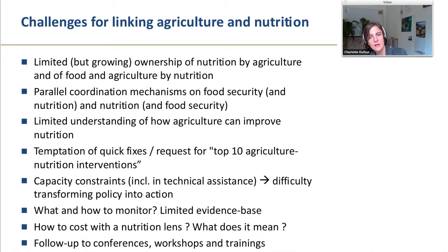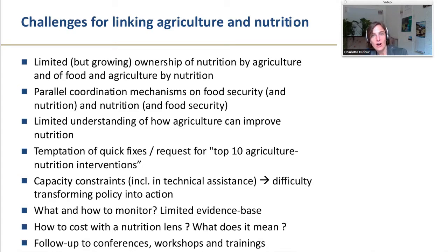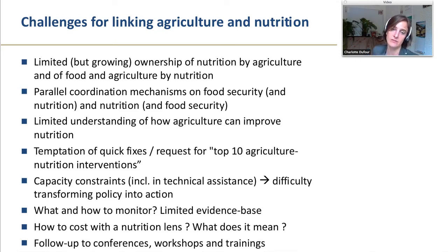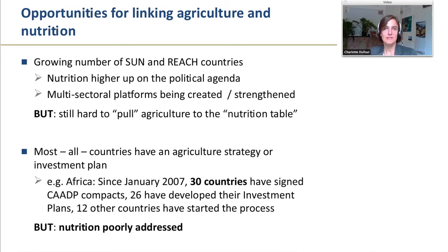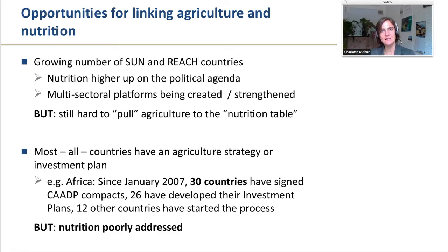There are huge capacity constraints, which I'll build on later. The question of what and how to monitor: what can agriculture be held accountable for — reducing stunting, improving diets? What's the evidence base to say which intervention is likely to have an impact? Questions around cost: what does it mean to integrate nutrition in an investment plan? What are the cost implications and trade-offs between economic objectives and nutrition objectives? And finally, we have nice workshops and conferences and trainings, but how do we ensure follow-up?